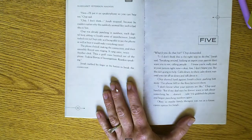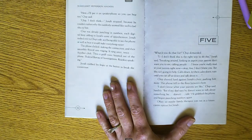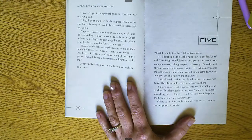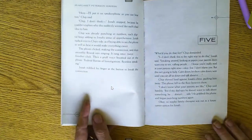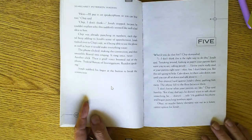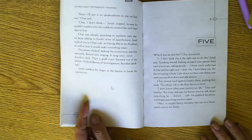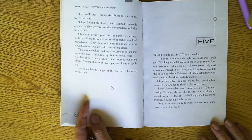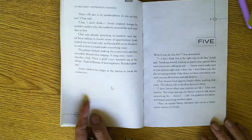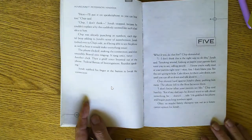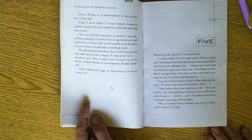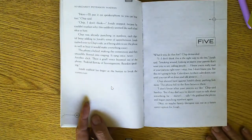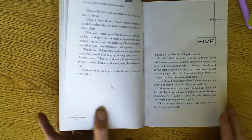But this isn't going to help. Calm down. Let them calm down. Wait until you can all sit down and talk about it. Chip shoved hard against Jonah's chest, pushing him away. The phone fell to the floor between them. I don't know what your parents are like, Chip said harshly. But if my dad says he doesn't want to talk about something, he doesn't talk. He grabbed the phone and began punching the numbers again. Okay, so maybe family therapist was out as a future career option for Jonah.